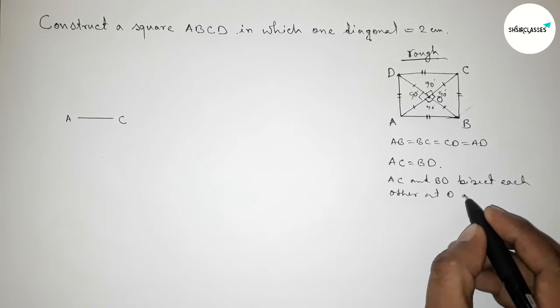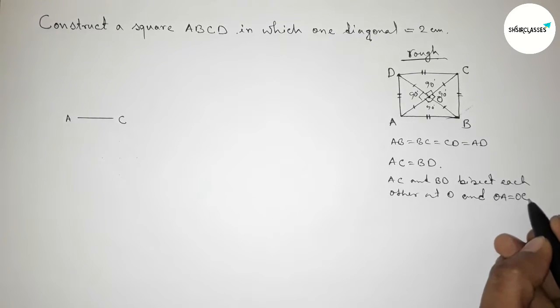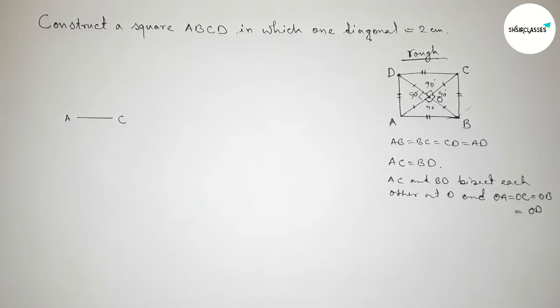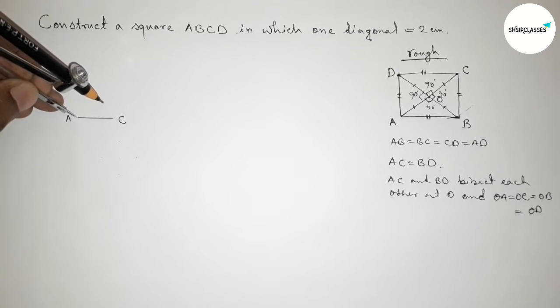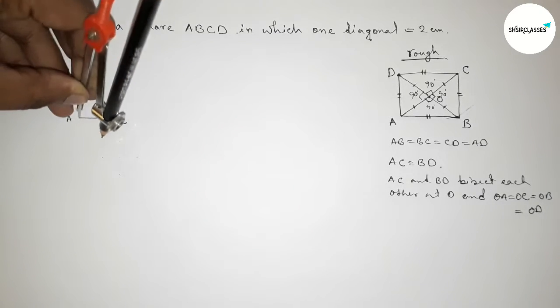And now we know that the two diagonals AC and BD bisect perpendicularly each other at the point O, so we can write OA equals to OC equals to OD equals to OB.